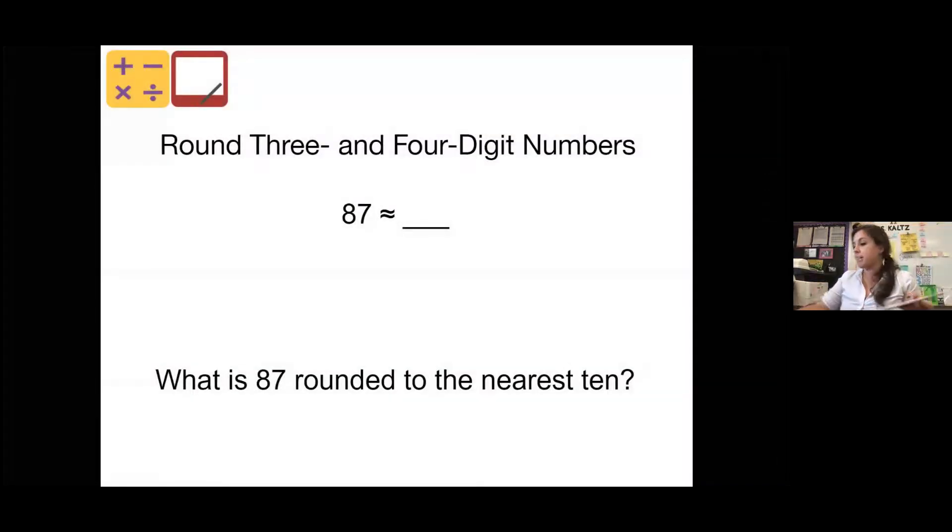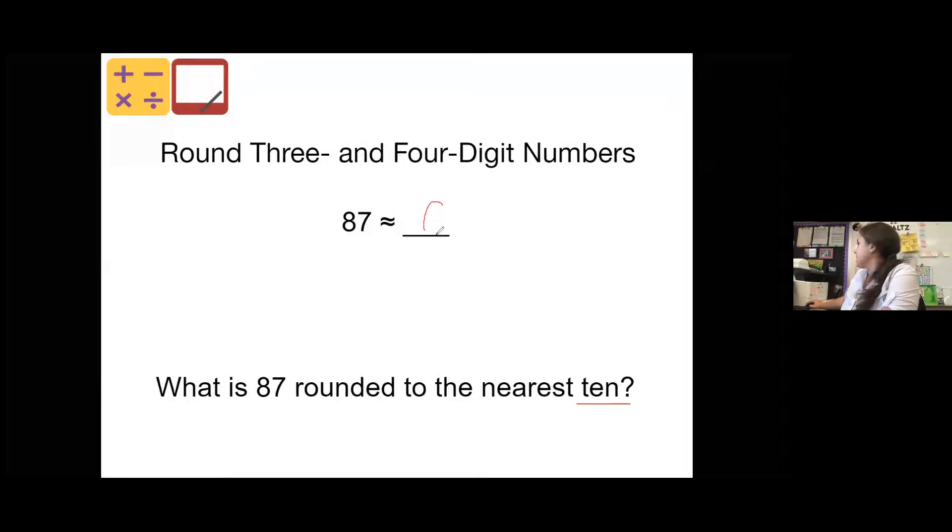All right, we're going to practice some rounding. So I have 87 and I'm going to round that to the nearest 10. So remember, if we're rounding to the nearest 10, my answer is going to have one zero at the end. So what number is 87 closest to? I'll let you think about it. If you need to draw a vertical number line, go ahead. Pause the video if you need more time. 87 rounds to 90. 87 is above the halfway point of 85, so it goes up to 90.